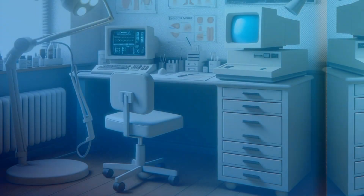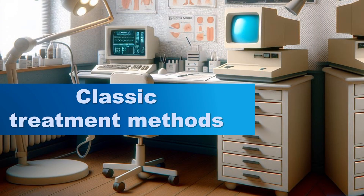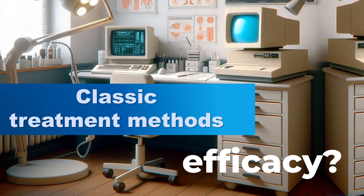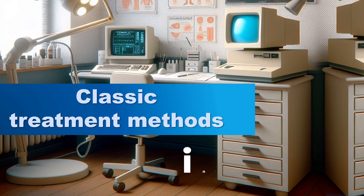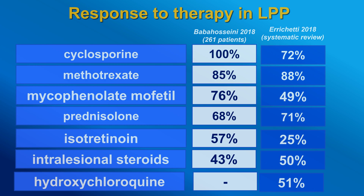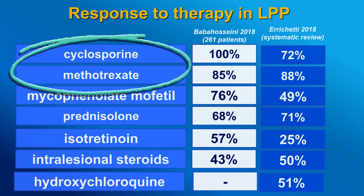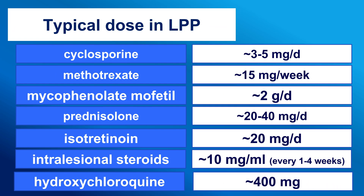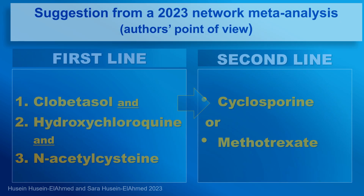Starting with classic methods of treatment: a few years ago, there were two very nice publications about the efficacy of different types of treatment in lichen planopilaris. Cyclosporine and methotrexate were best rated in regards to efficacy, and the typical doses used in the literature are outlined. More recently, an article suggested an algorithm for treatment.